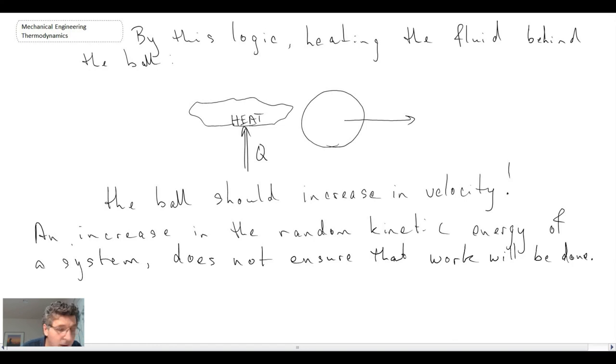Looking back at the first law, we had Q minus W equals delta U plus delta PE plus delta KE. What this tells us is that direction of flow or energy flow, I'll call it energy transfer.